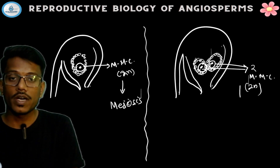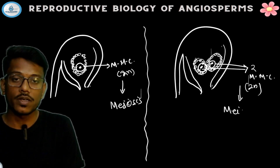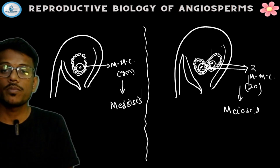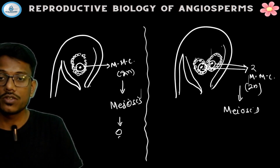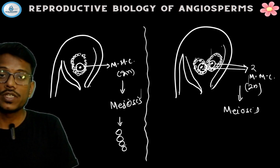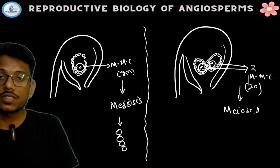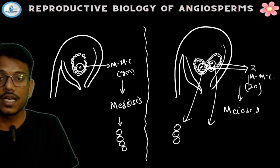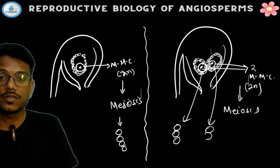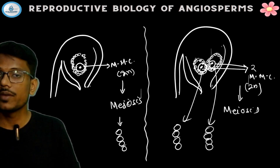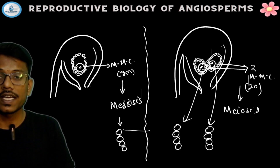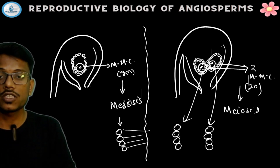Where meiosis occurs, four cells are formed from each megaspore mother cell — one, two, three, four. So from both megaspore mother cells, meiosis occurs and four cells are produced from each. Any four cells formed at this stage are called megaspores.